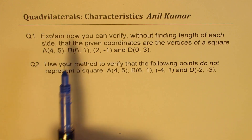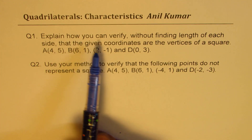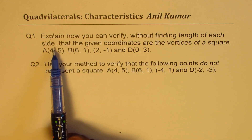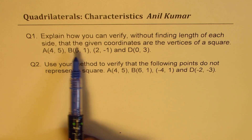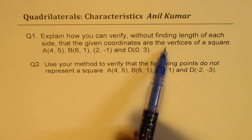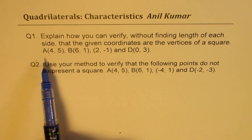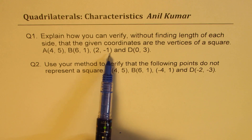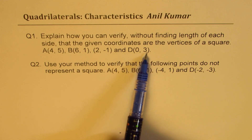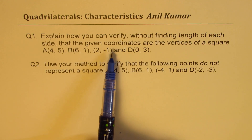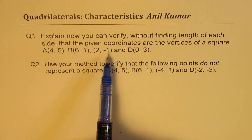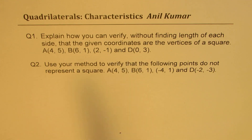Question number one: explain how you can verify without finding the length of each side that the given coordinates are the vertices of a square. The coordinates are A(4,5), B(6,1), C(2,-1), and D(0,3). So without finding the length of each side, you have to figure out that these coordinates represent a square.